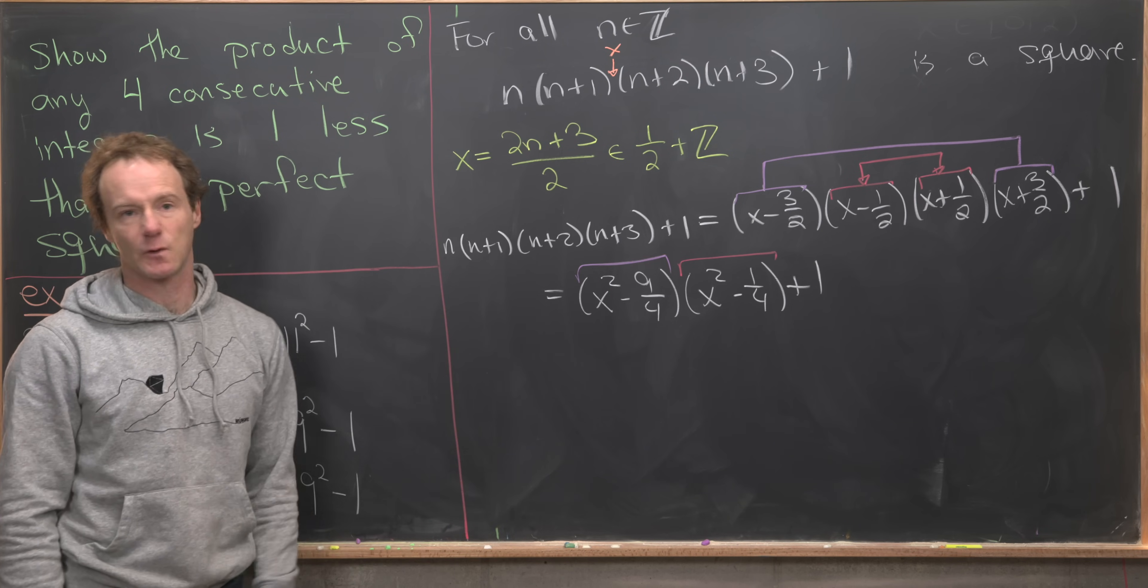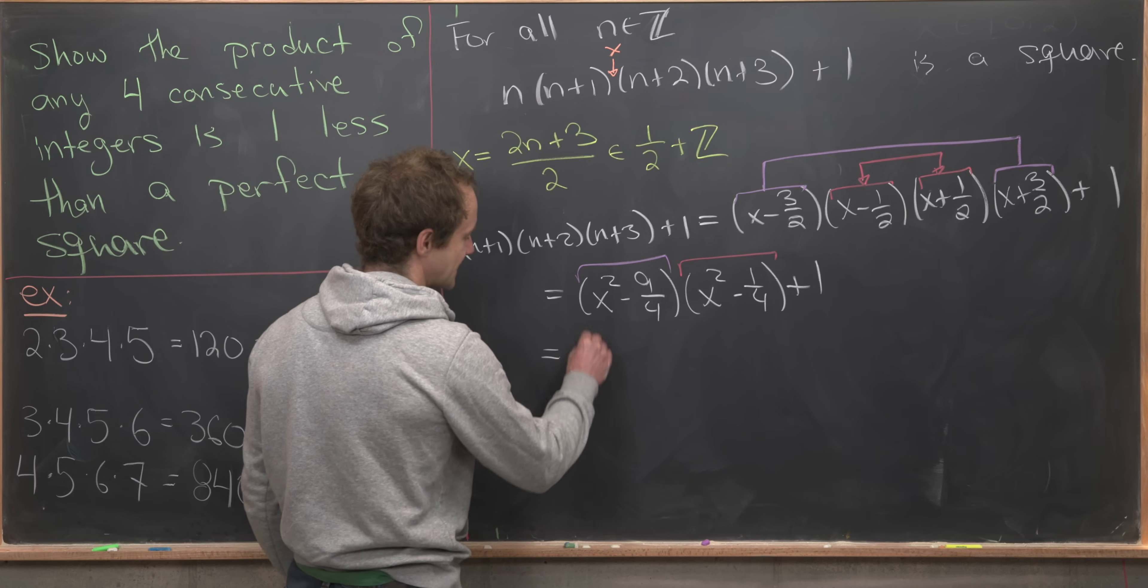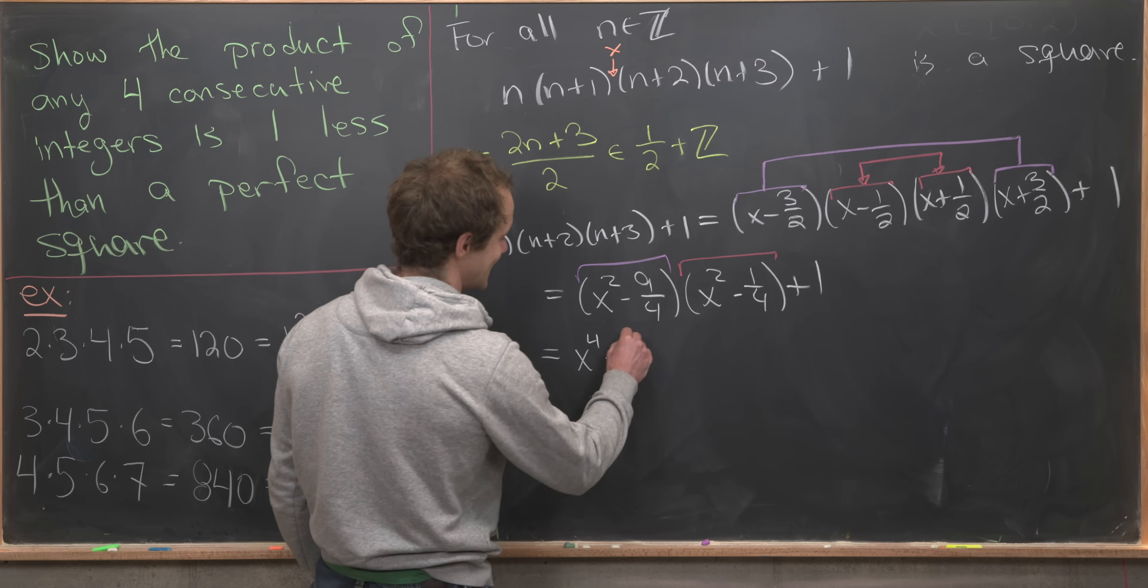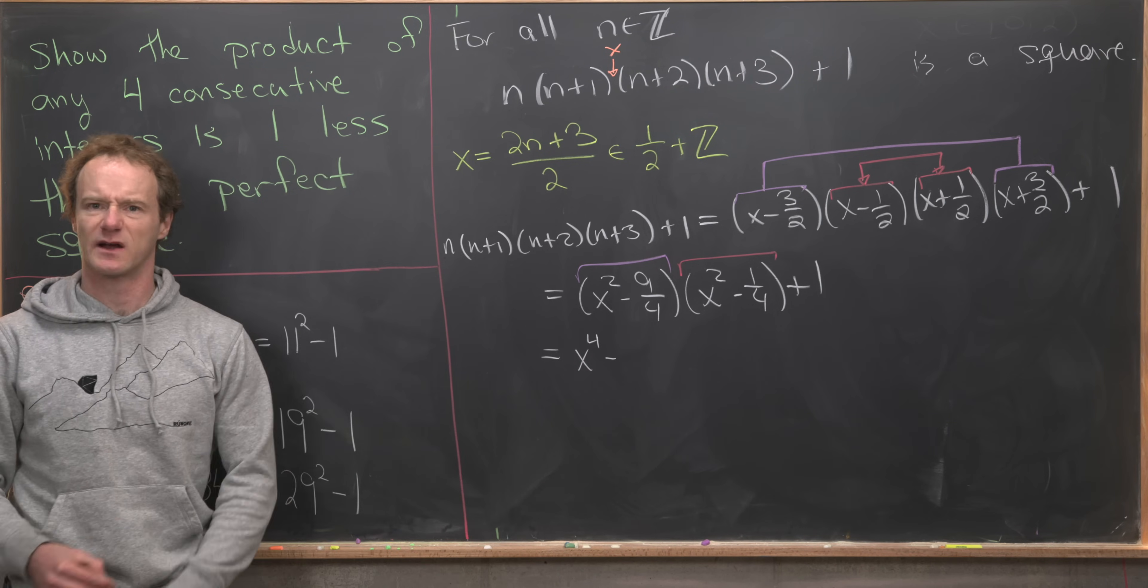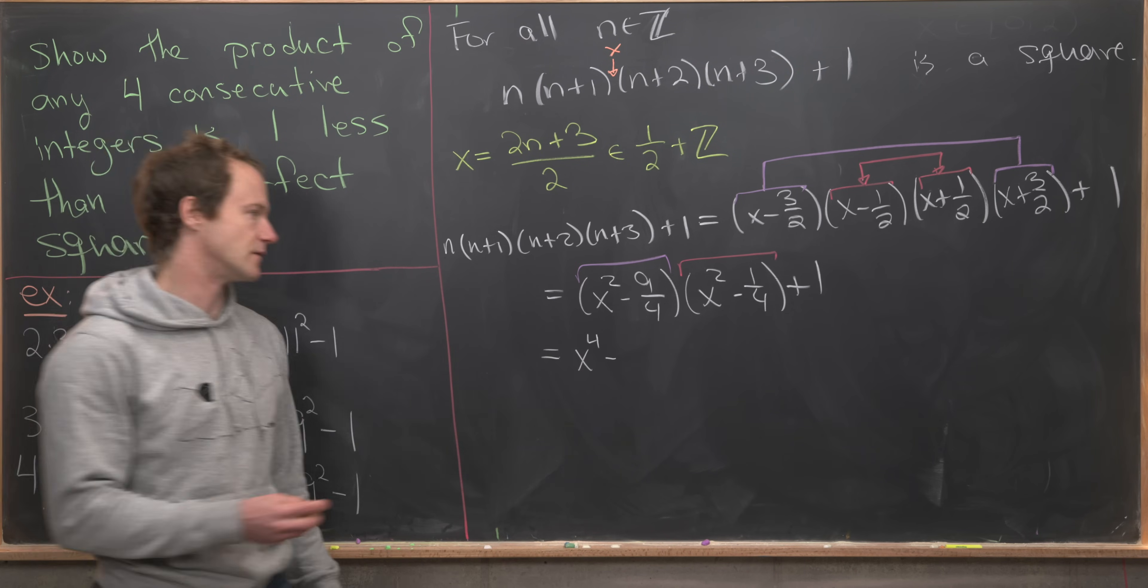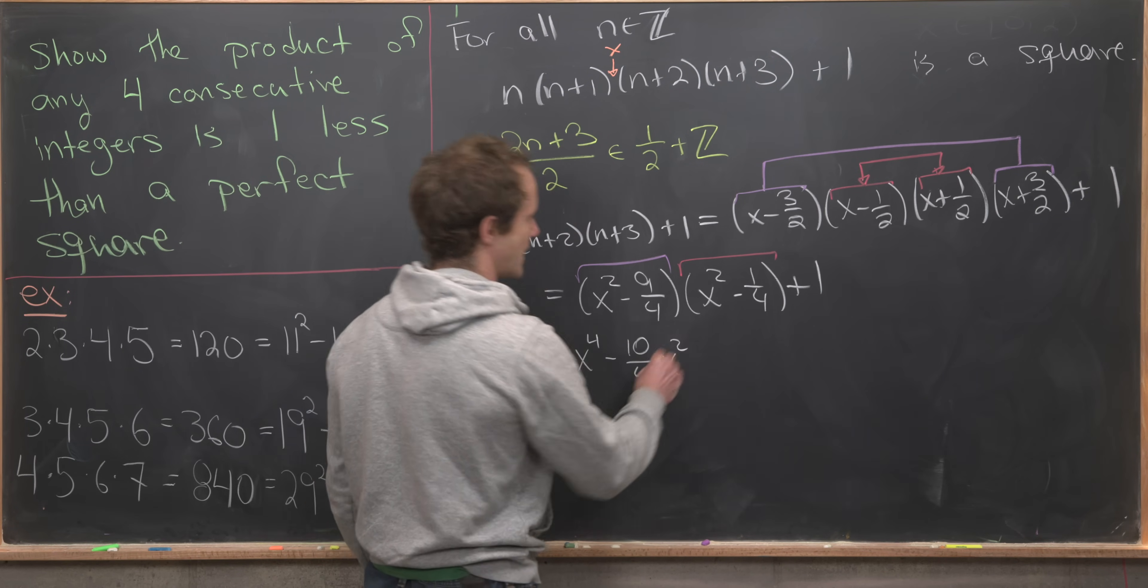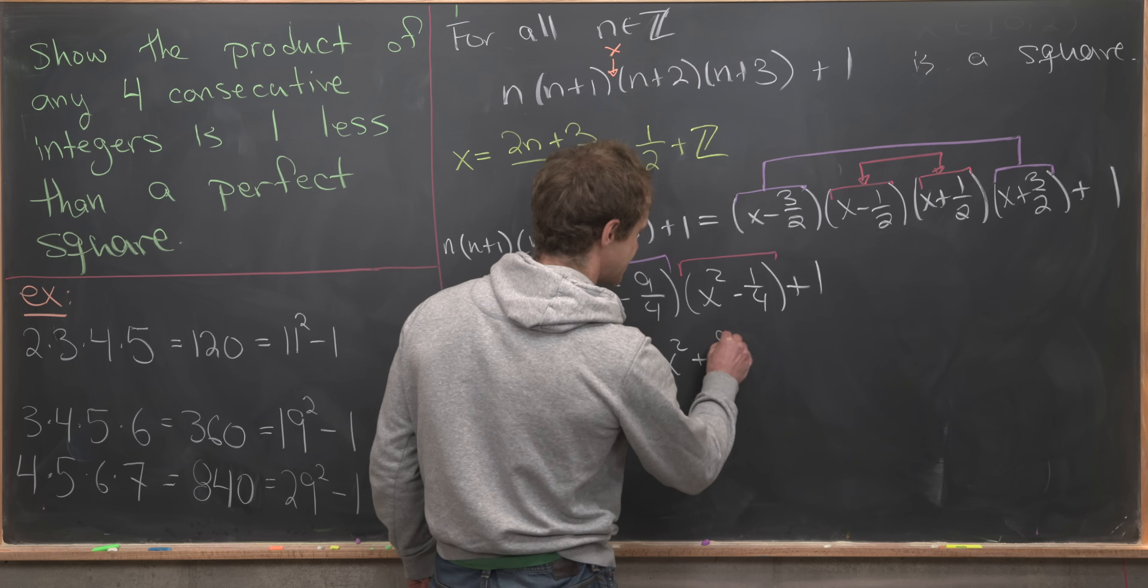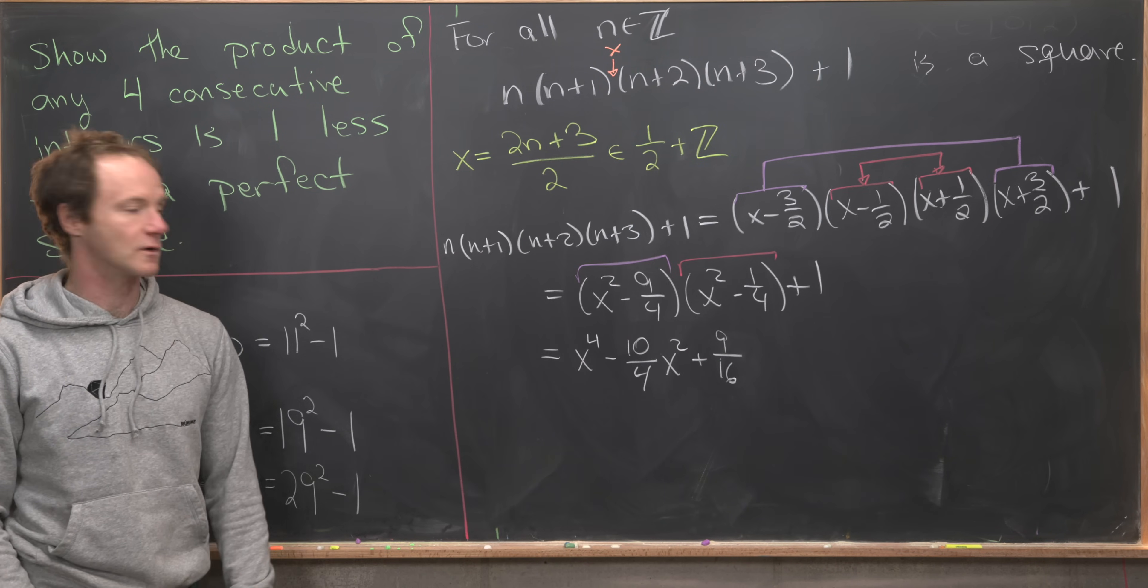Now we can just foil out this object right here. That's not too hard to do. We'll get x⁴ minus, so it'll be 10/4 times x². And I'm actually not going to reduce that fraction, as it'll be more useful to have it unreduced later. So I'll write this as 10/4 x². And then we'll have plus 9/16 from the 9/4 times the 1/4.